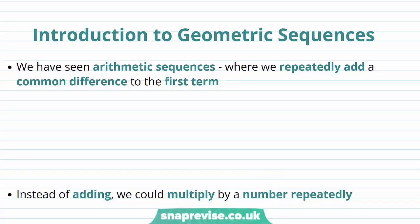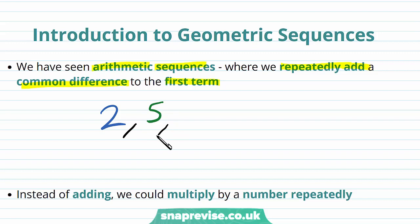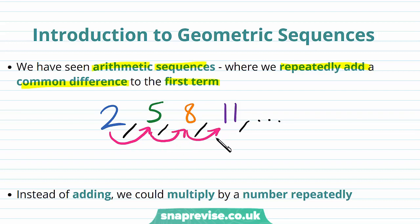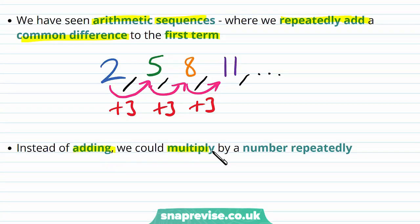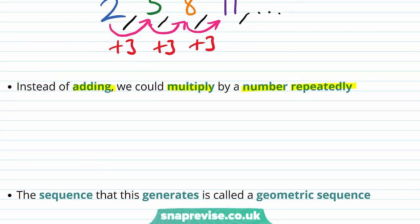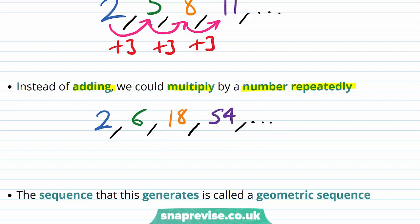So what exactly is a geometric sequence? We have seen arithmetic sequences where we repeatedly add a common difference to the first term. For example, we could have the arithmetic sequence 2, 5, 8, 11 — we take our first term 2 and at each stage we add a constant number, in this case plus 3. Now instead of adding, we could multiply by a number repeatedly.